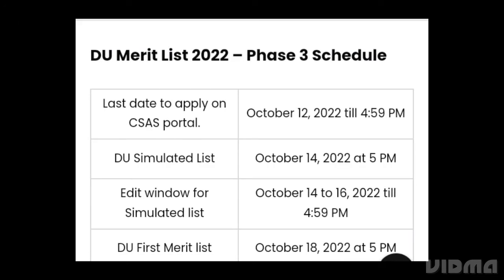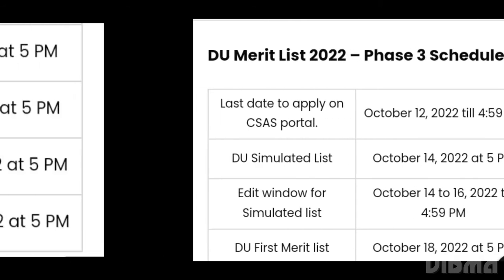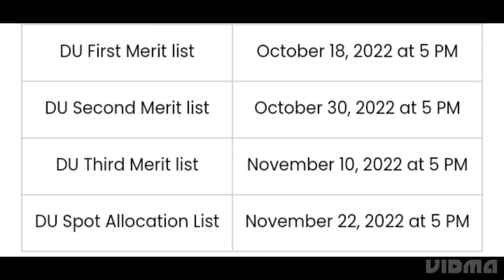Regarding the DU merit list important Phase 3 schedule: the last day to apply is October 12th. DU simulated list is October 4th, with an edit window for the simulated list from October 4th to 6th. DU first merit list is October 8th, 2022. DU second merit list is October 13th. DU third merit list is November 1st.